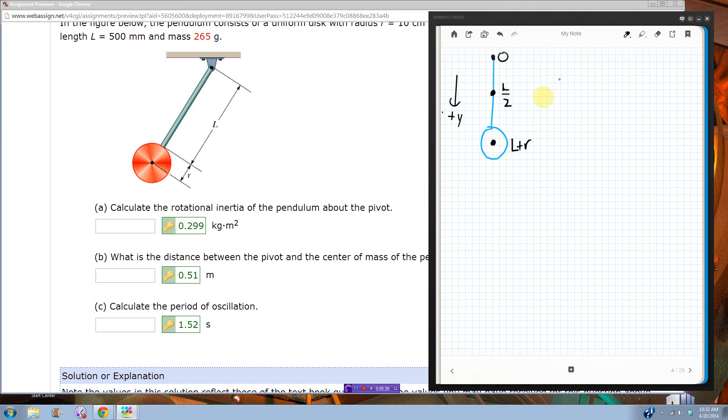So if I do my handy dandy center of mass position equation, you know, that's, uh, that would be the mass of the rod times the Y coordinate of the rod, plus the mass of the disc times the Y coordinate of the disc, all over, add up all of the masses, okay?